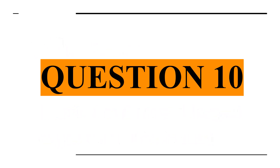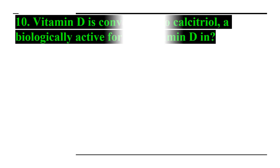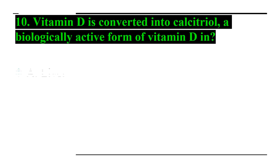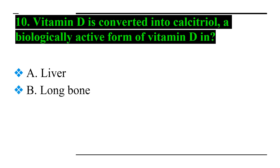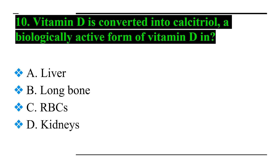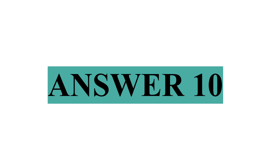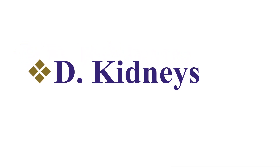Question number ten: vitamin D is converted into calcitriol, a biologically active form of vitamin D, in — Option A: liver, Option B: long bone, Option C: RBCs (red blood cells), and Option D: kidneys. Answer number ten: Option D — kidneys.